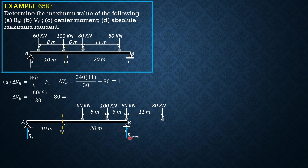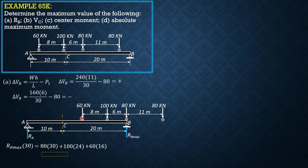To solve for RB max, we sum moments about A equal to zero. RB max times 30 equals 80 times 30, plus 100 times 24 (since 30 minus 6 is 24), plus 60 times 16 (since 24 minus 8 is 16). Solving, RB max equals 182 kN.